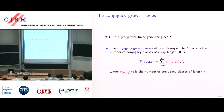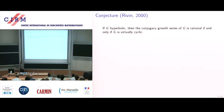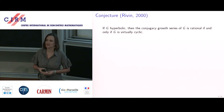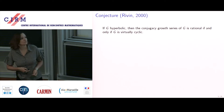I'll define the conjugacy length of an element or conjugacy class in just a moment. The work that started this was a conjecture of Riven, from a preprint from 1999 called 'Growth of Free Groups and Other Stories,' which was on the archive for a long time before it got published in 2010. Riven said at the end: if we have a word hyperbolic group G, then the conjugacy growth series should be non-rational unless the group is virtually cyclic.